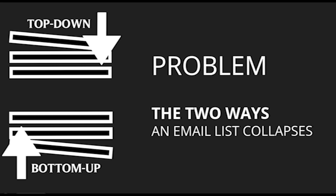I like to refer to these as the top-down cascade and the bottom-up cascade. The top-down cascade is the result of a poor foundation, so your list collapses in on itself. Things like you start seeing a drop in the amount of people interacting with your emails — after a while they start unsubscribing.